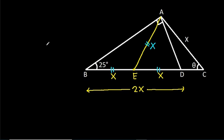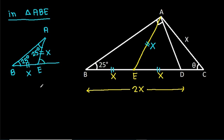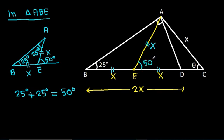Now, in triangle ABE, we have AE equal to BE, both equal to X. That means these two base angles will be equal. This angle ABC is 25 degrees, so angle BAE will also be 25 degrees. Therefore, angle AEB will be 25 plus 25 equals 50 degrees.